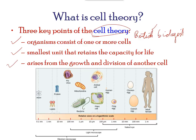You can see from the image a comparative logarithmic scale showing the size of the cell and its visibility as seen via the naked eye, light microscope, and electron microscope.